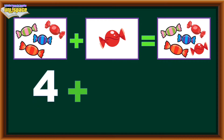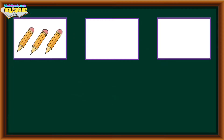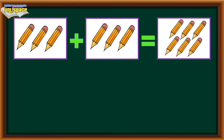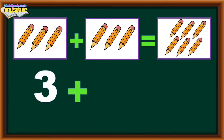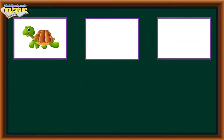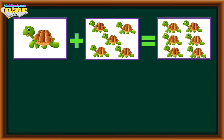4 plus 1 equals 5. 3 pencils plus 3 pencils equals 6 pencils. 3 plus 3 equals 6. 1 turtle plus 5 turtles equals 6 turtles.